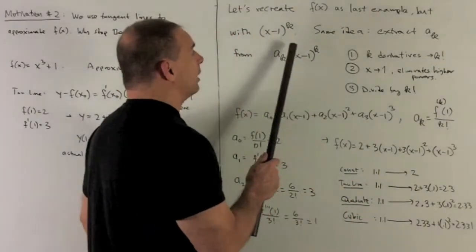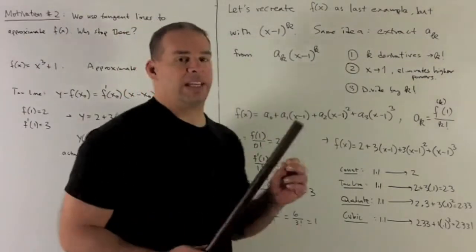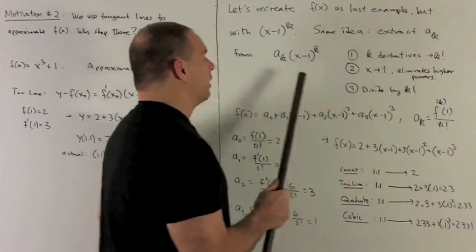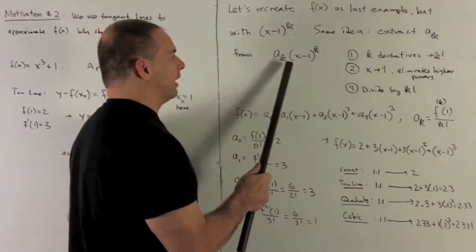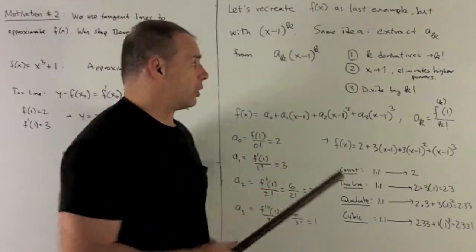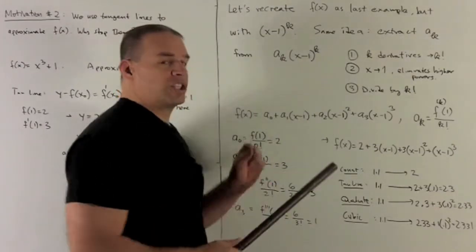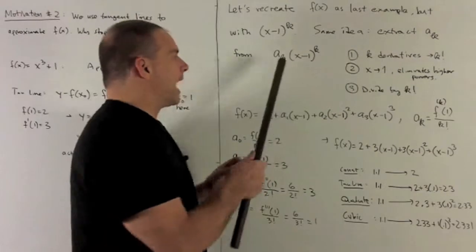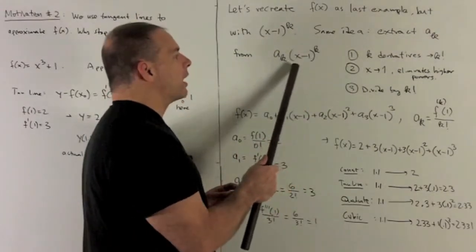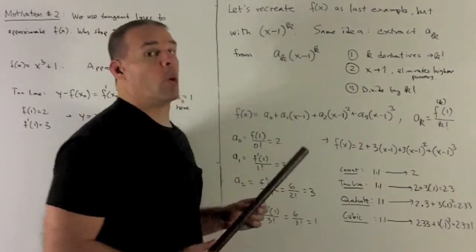It's going to be the same idea. We want to take a look at (x minus 1) to the kth power. So we'll need to know how to extract a sub k from the term a sub k (x minus 1) to the k. Same thing we did before. I want to drive down the powers by taking k derivatives. The only thing that's going to change now is we get rid of them by putting 1 in.